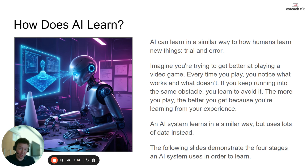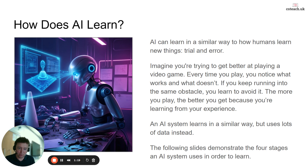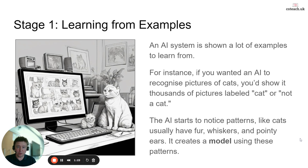AI systems learn in a very similar way, but instead of continually playing the game over a long period of time, they use lots and lots of data so they can learn faster. I've come up with four stages — not the official stages, but four stages the AI system uses in order to learn. The first one is learning from examples.